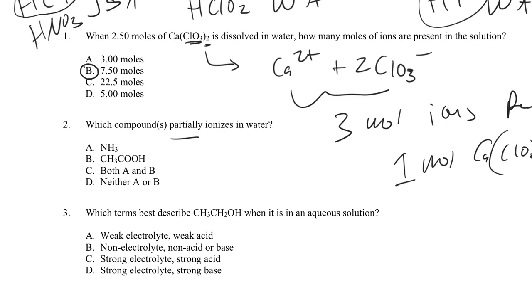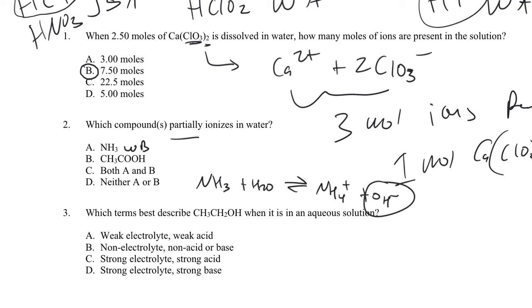Which compounds partially ionize in water? NH3 is our prototype weak base — it partially reacts with water to form ammonium cation and hydroxide ion, to about five percent. Acetic acid is a weak acid that partially ionizes to acetate and H+. Both NH3 and acetic acid partially ionize in water — they're weak electrolytes. Things that partially ionize in water are weak electrolytes.